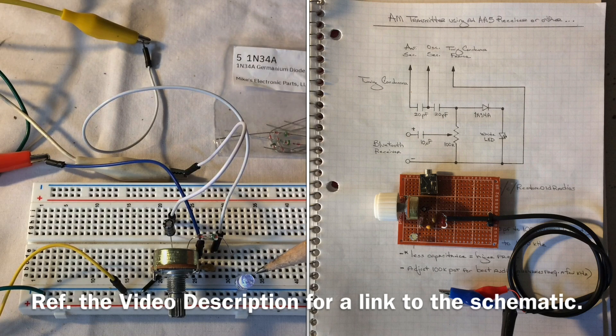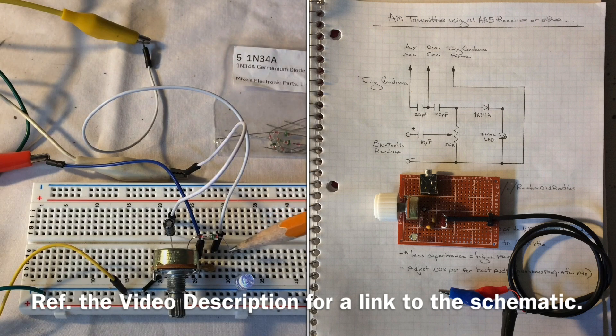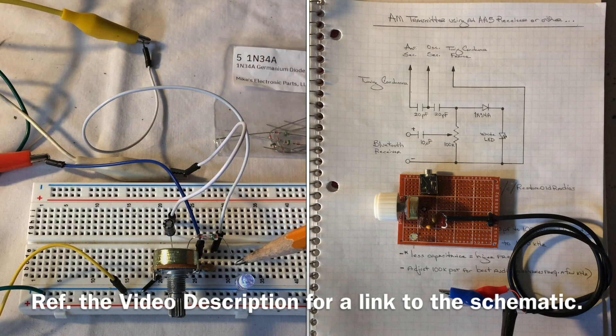And then you can see the 220 picofarad capacitors. Those values can be anywhere from 10 to 220. You can see one section drives the antenna side of the tuning condenser, the other side attaches to the oscillator, and the other side goes to the tuning condenser frame.